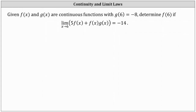Given f of x and g of x are continuous functions with g of 6 equals negative 8, determine f of 6 if the limit of the sum of five times f of x and f of x times g of x as x approaches 6 equals negative 14.